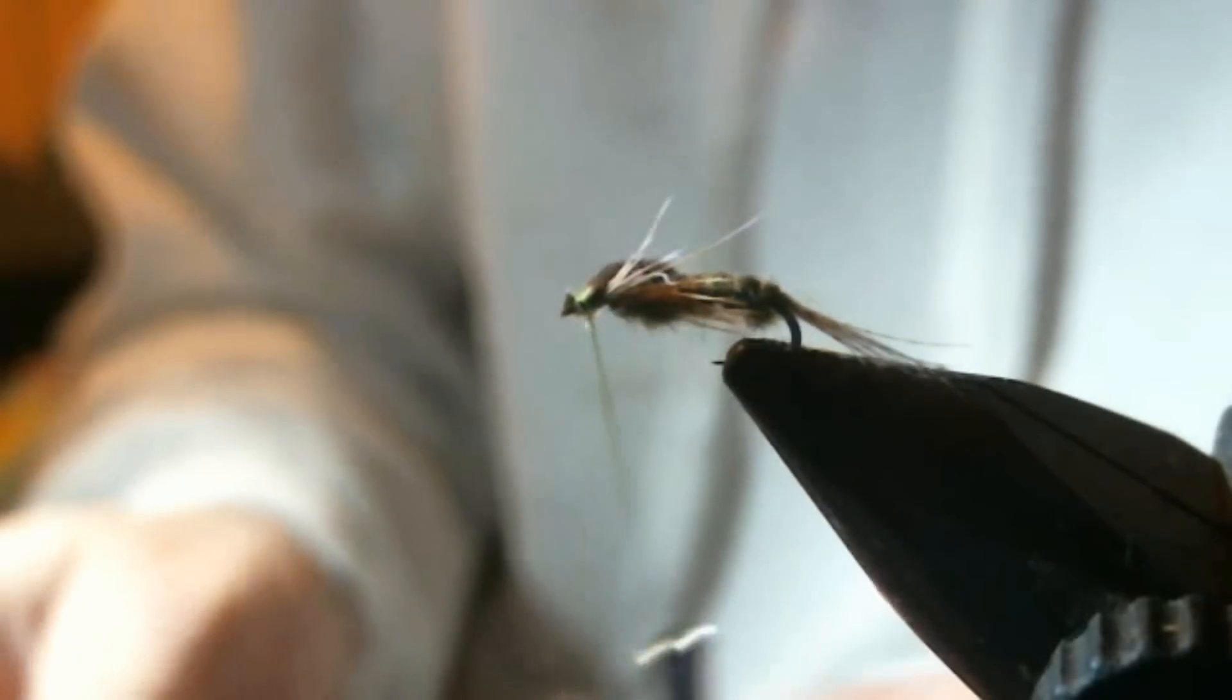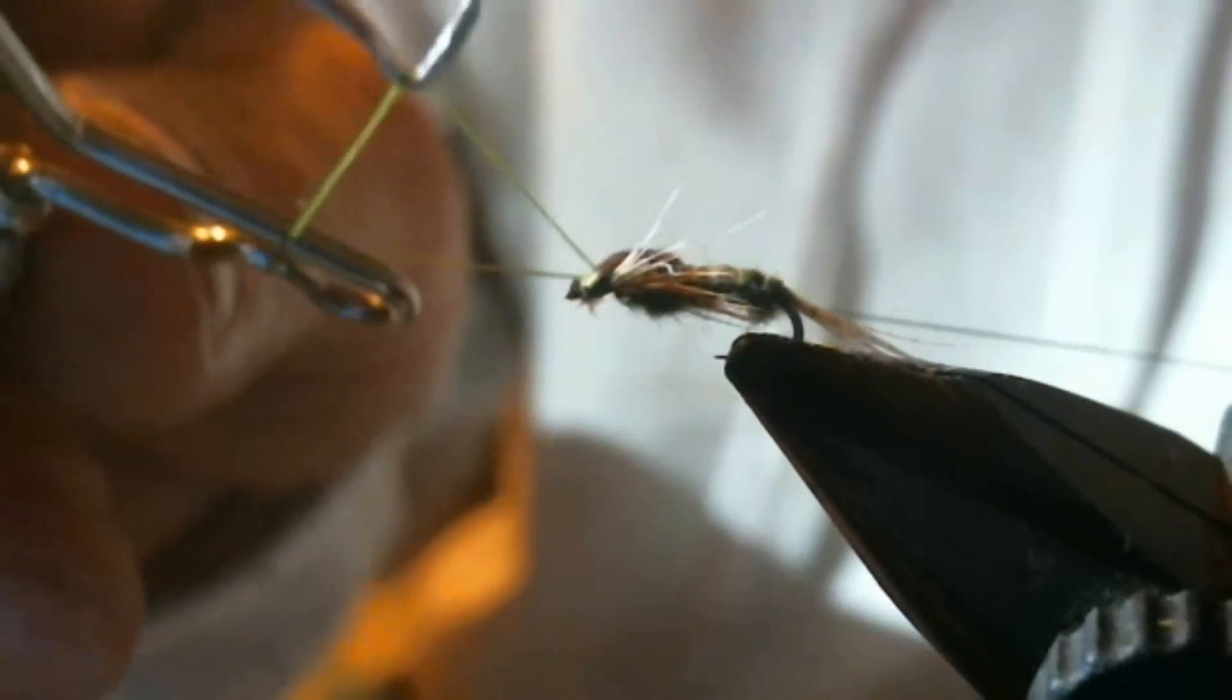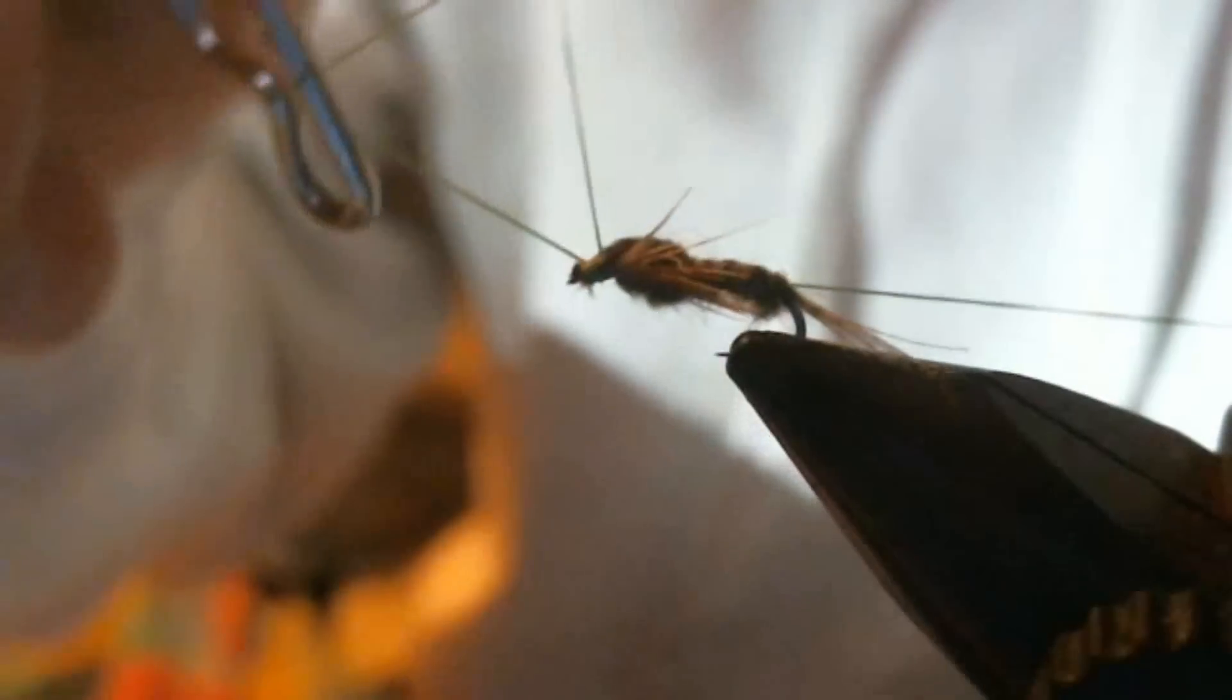Now you've got your legs, your tail, your abdomen, your ribbing. And I think you're about ready to wrap this bad puppy up and put her head on her. We'll finish a couple of wraps.